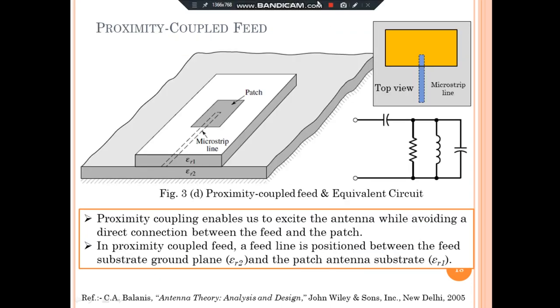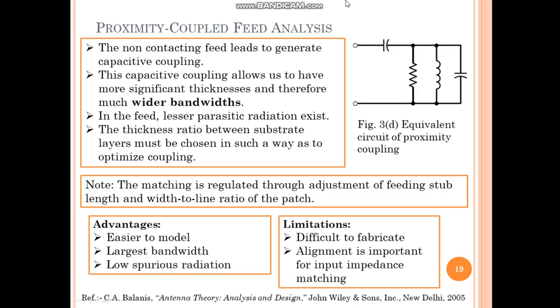The fourth technique is the proximity-coupled feed, which enables excitation of the antenna while avoiding a direct connection between the feed and the patch. In this feed, the feed line is positioned between the feed substrate (Epsilon R2) and the patch. The equivalent circuit and top view are also shown. In the proximity-coupled feed, there exists a capacitive coupling which allows enhancement of the bandwidth of the system. It has lesser parasitic radiation effects compared to other feeding techniques. The advantages are easy to model and larger bandwidth with less spurious radiation. However, it has some limitations: difficult to fabricate, and alignment is critical for impedance matching due to the multi-layered structure configuration.